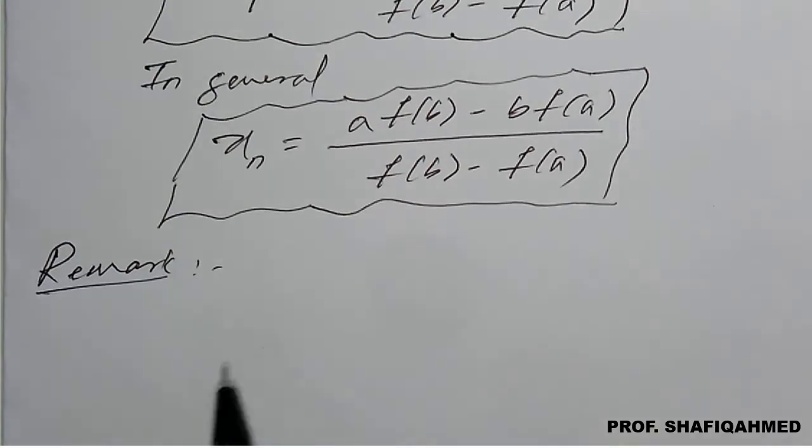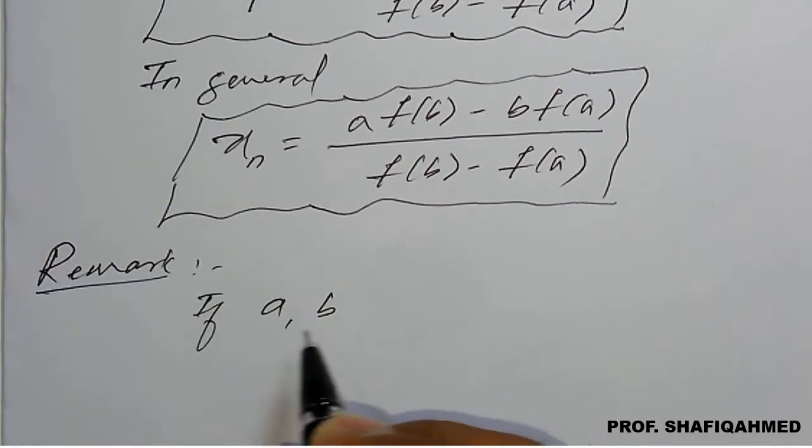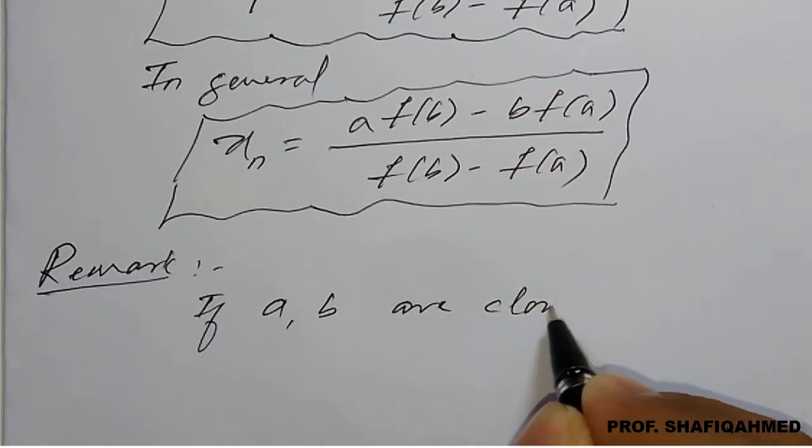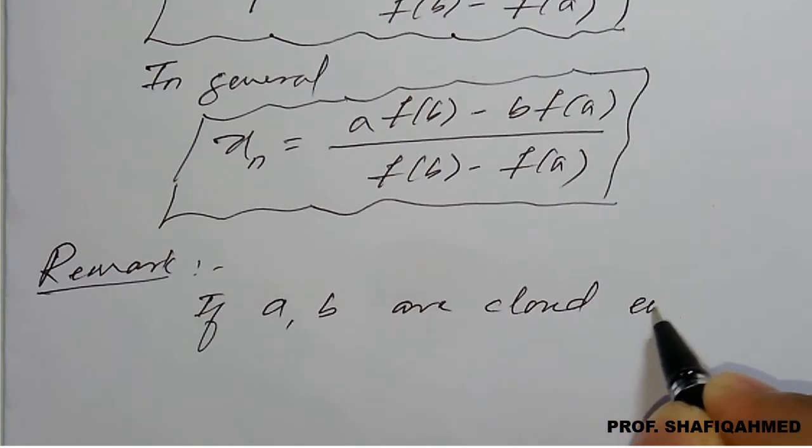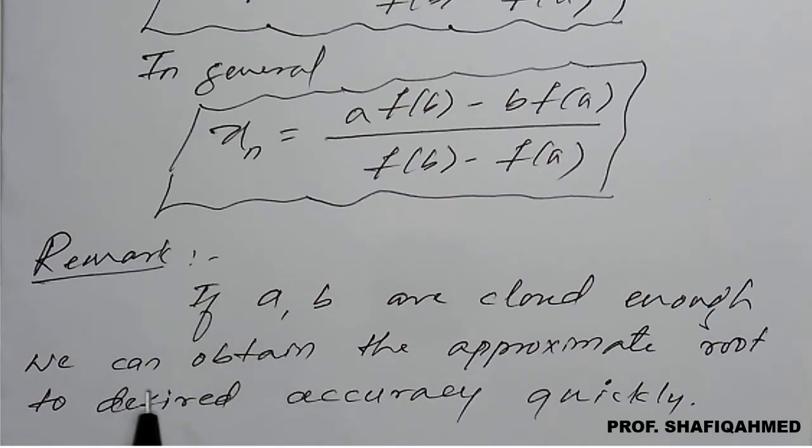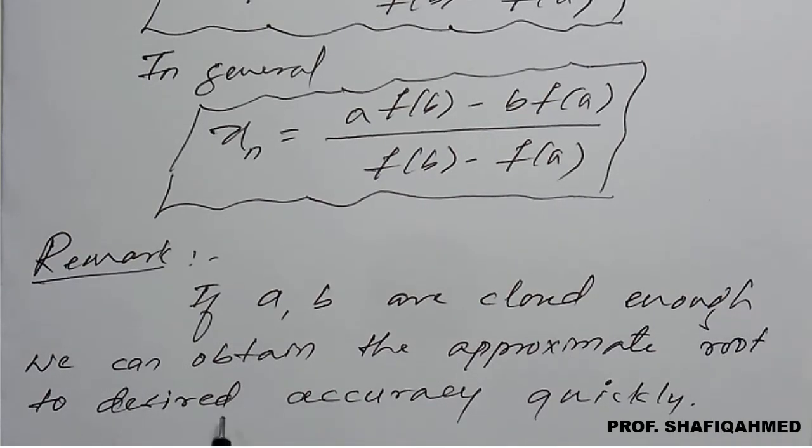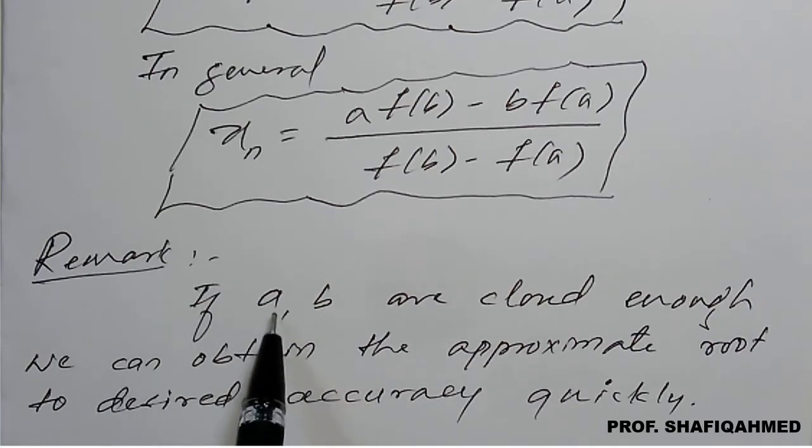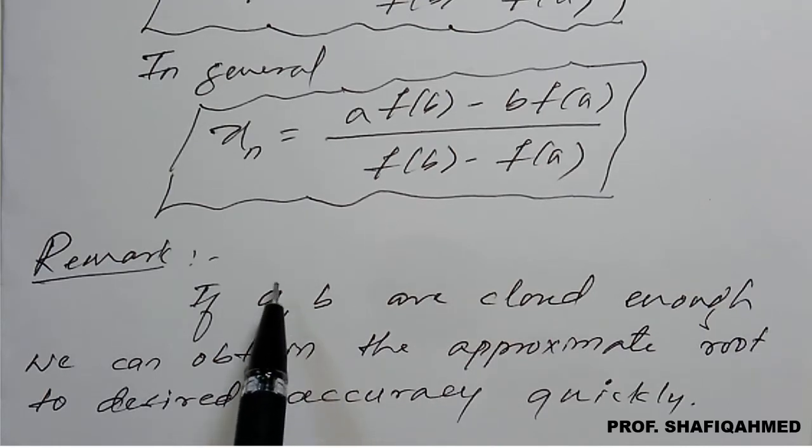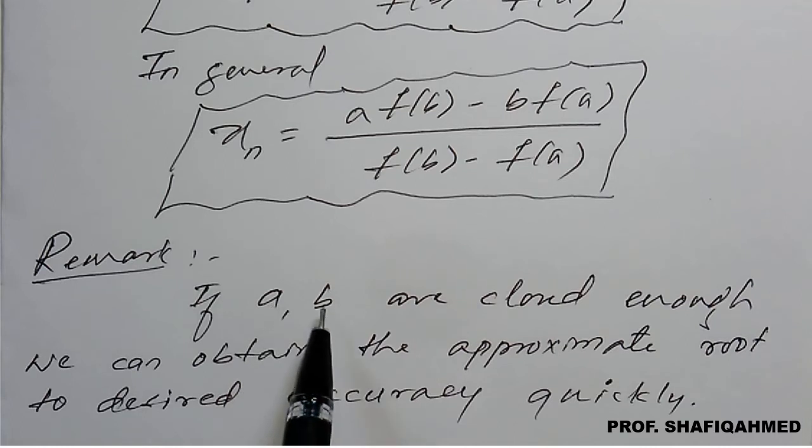So remark is if a and b these are the two initial values or boundaries for the given root. So if the root are closed enough we can obtain the approximate root to desired accuracy quickly. So if you bring the root nearer, so in among this one will be positive one will be negative because if I apply a in f of x so one will become positive and one will become negative.